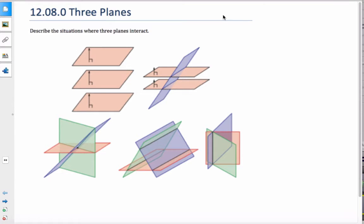Okay, so today we're going to talk about three planes and how they intersect. And from these diagrams here, we can see these are five of the possible configurations that could happen.